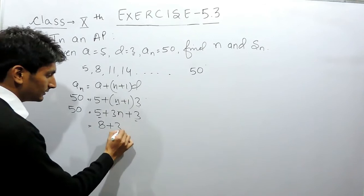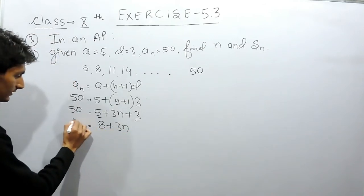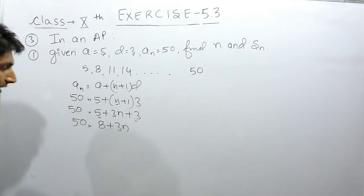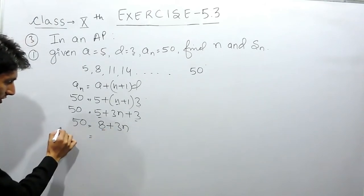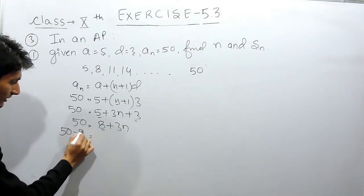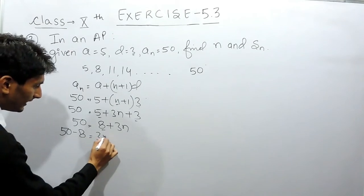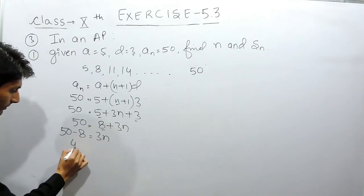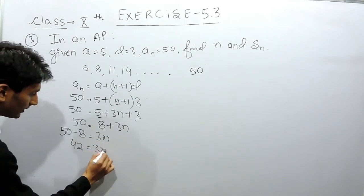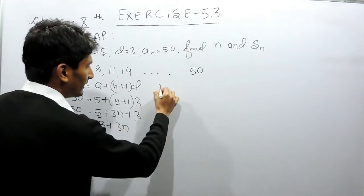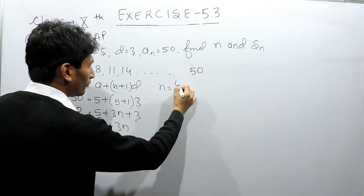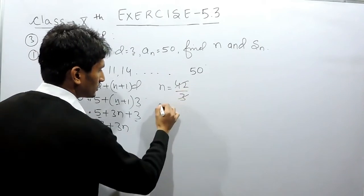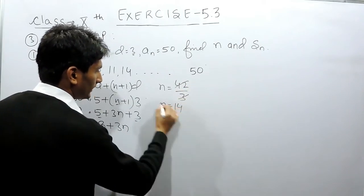These can be added and the other terms will remain as it is. Now this constant can be shifted to this side and positive 8 will become minus 8, and 50 minus 8 will be 42, and 3N. Now the value of N will be equal to 42 upon 3 which is equal to 14.